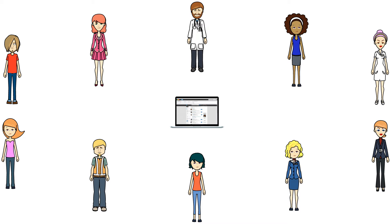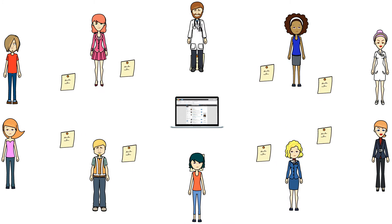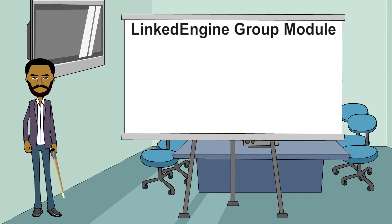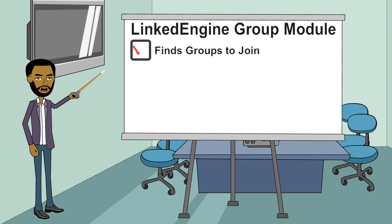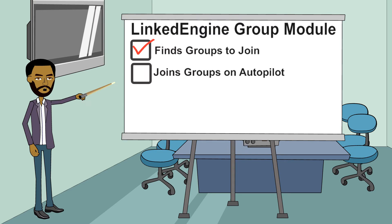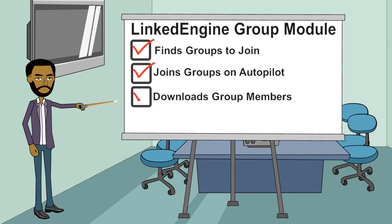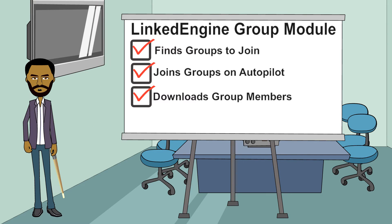And after they're in your network, you can download their email addresses and send them direct messages all with just one click. LinkedIn also handles the tedious job of finding new groups for you to join and joins them for you on autopilot too. Once you've joined a new group, you can download its members and LinkedIn will send them messages and connection requests as well.